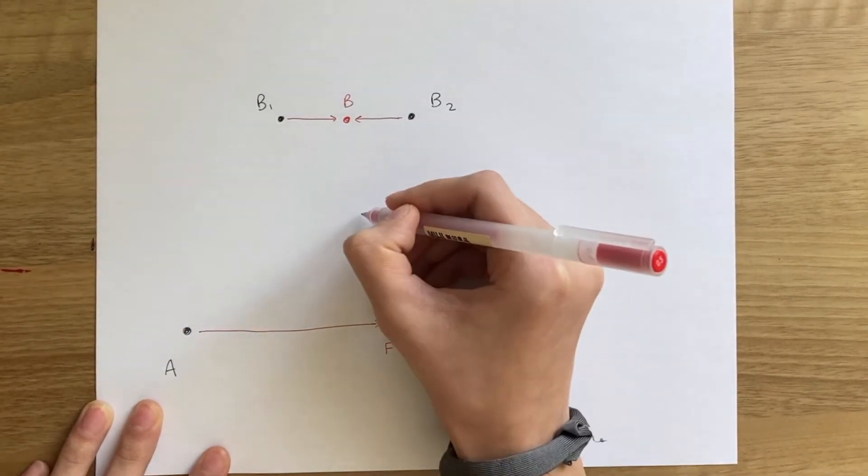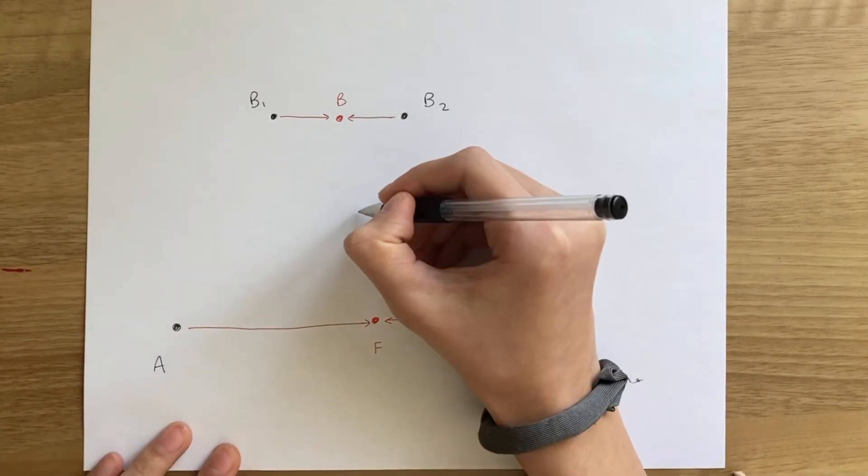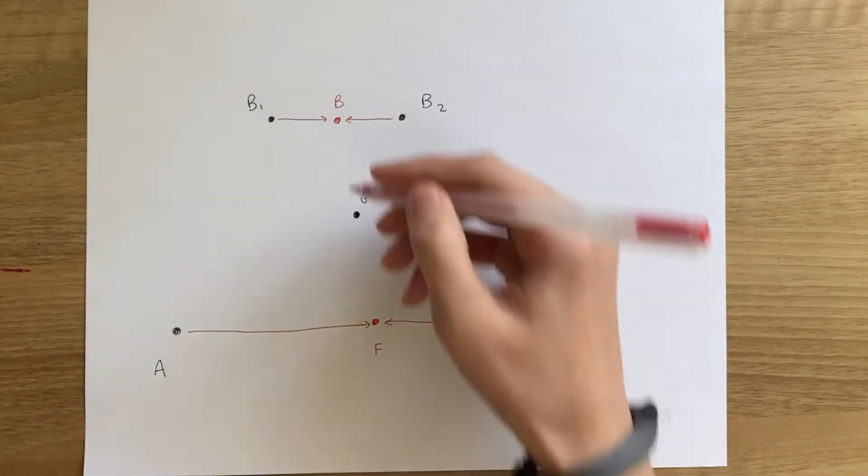Then the center of B and F, which we'll call G, has to be the center of all four starting points.